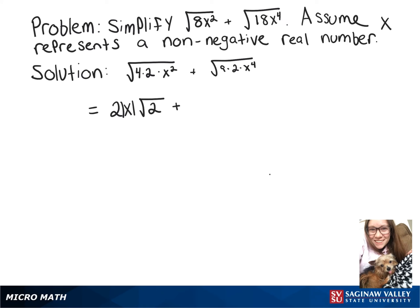And for our second part, the square root of 9 is 3. The square root of x to the fourth is x squared, because 4 divided by 2 is 2. And this also still has the square root of 2 left.